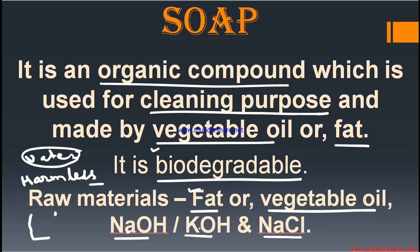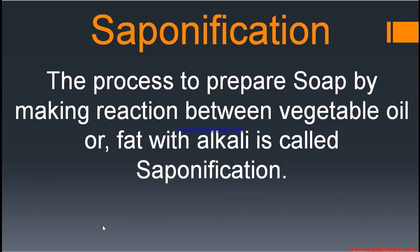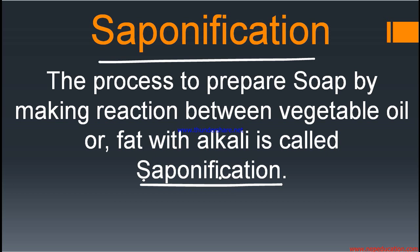After strongly heating, if you add a little amount of salt — NaCl — a precipitate forms on the surface. The solid thin layer that forms is the soap, and the liquid below is glycerol. Glycerol is the byproduct. The process of formation of soap is called saponification.